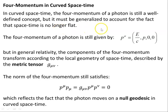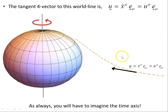Four momentum in curved spacetime. Now in curved spacetime, the four momentum of a photon is still a well-defined concept, but it must be generalized to account for the fact that spacetime is no longer flat. The four momentum of a photon is still given by this object, but in general relativity the components of the four momentum transform according to the local geometry of spacetime described by the metric tensor G mu nu. The norm of the four momentum still satisfies this, it's still a null geodesic, which reflects the fact that the photon moves on a null geodesic in curved spacetime.